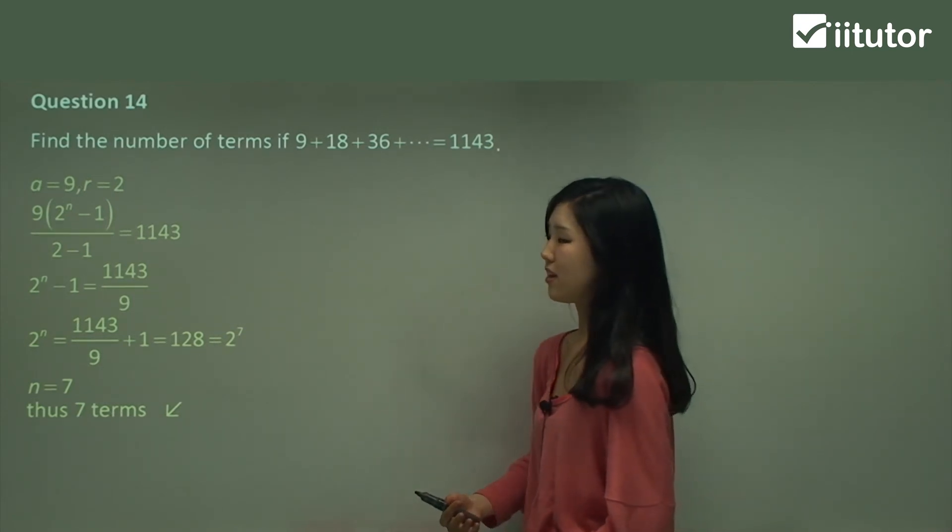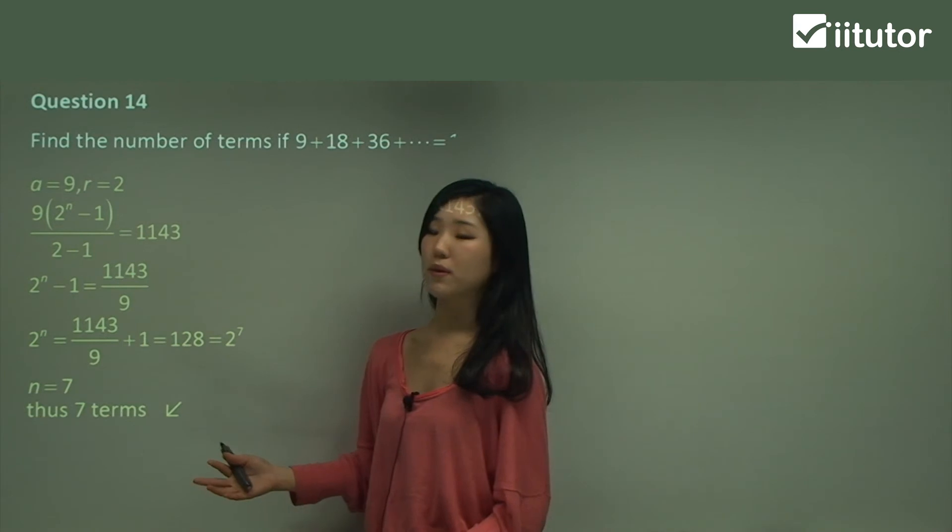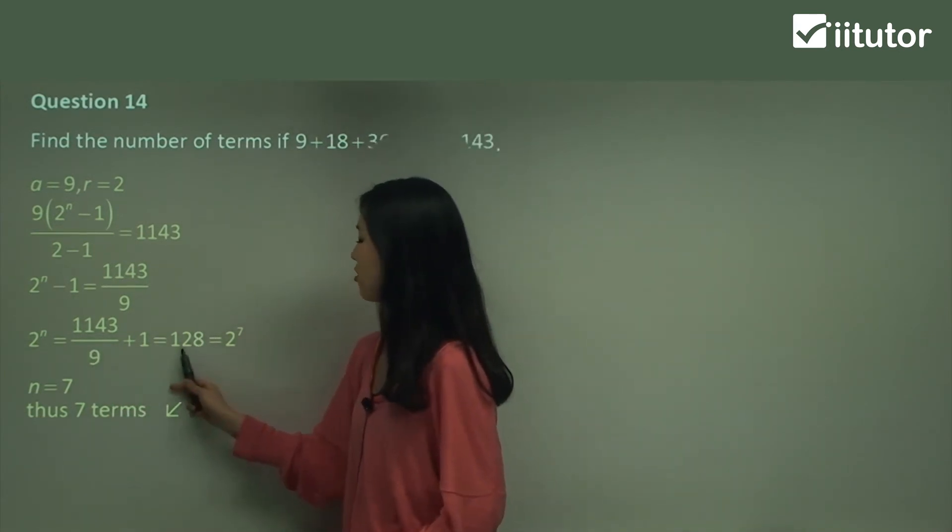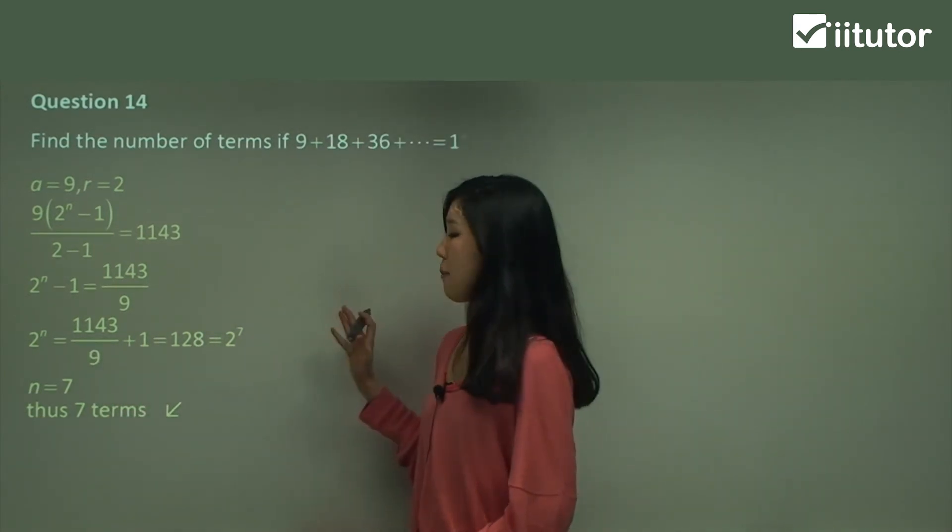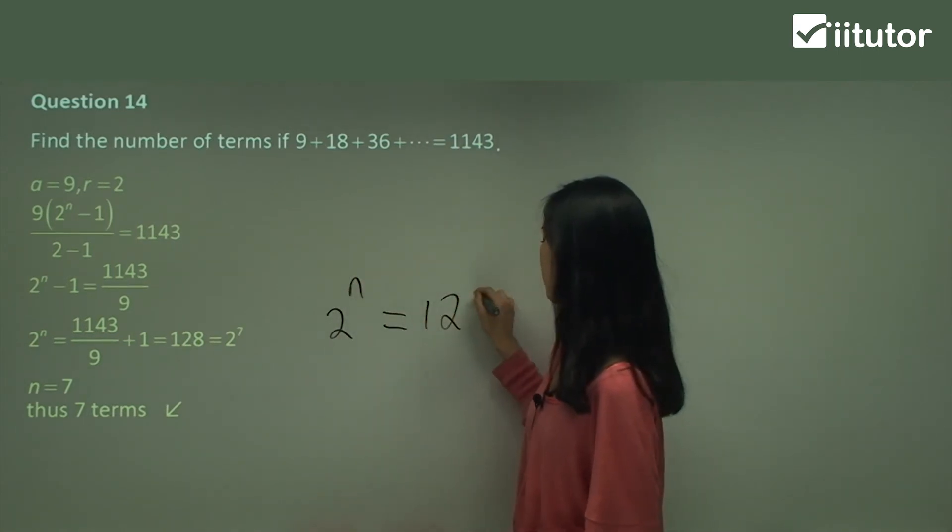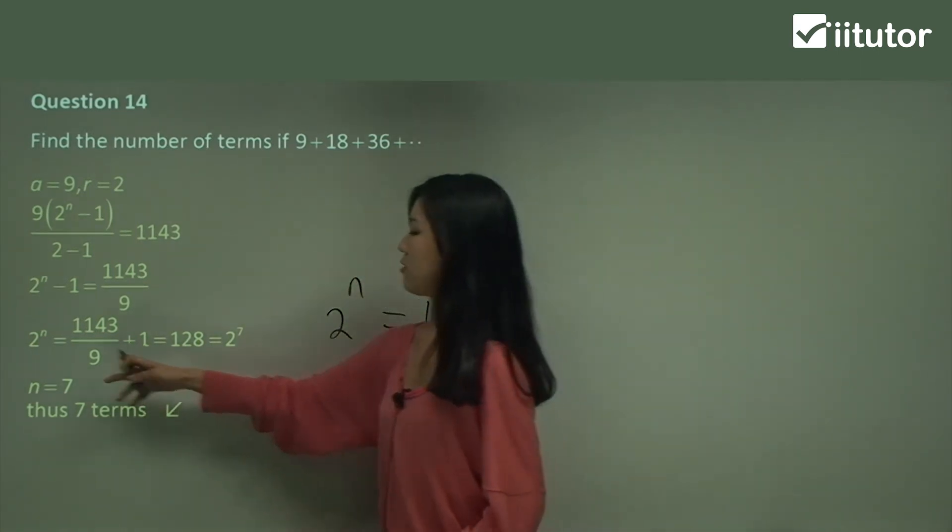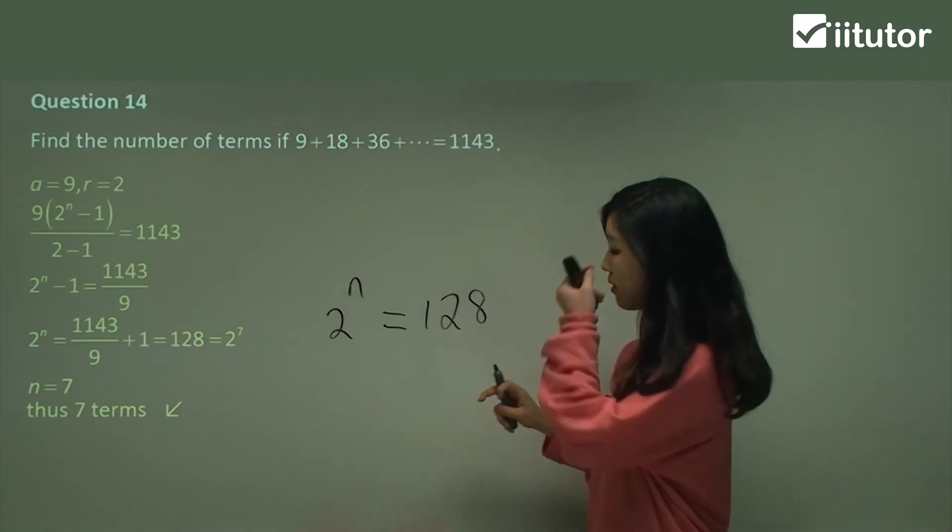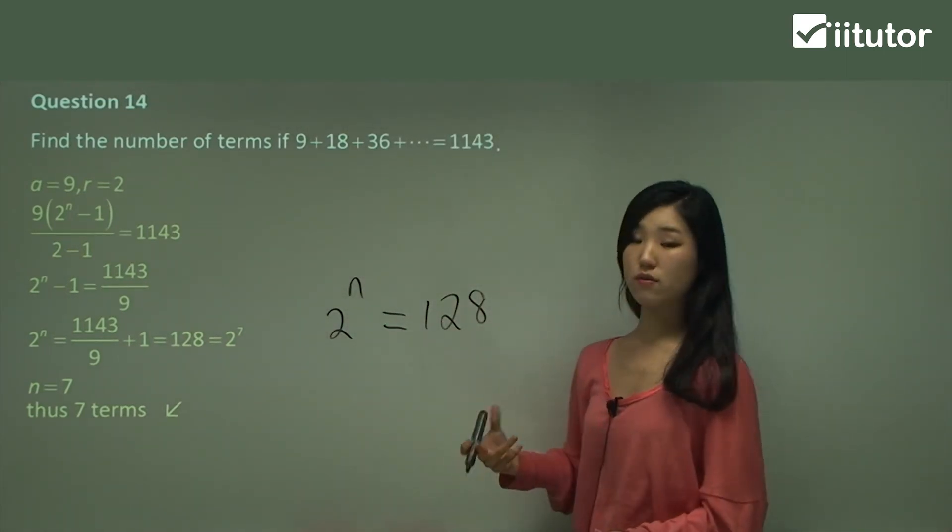Now you're probably wondering why we didn't use any logs. Well, this one was pretty simple because we can change this into 2 to the power of 7. But say for example, if you just want to do 2^n equals to 128. This is this one, 2^n equals to 128. Now you can use your log rules if you want to.